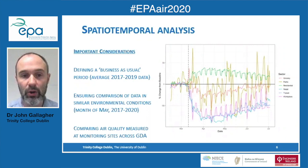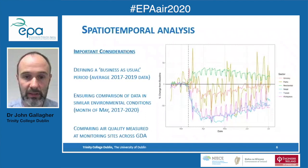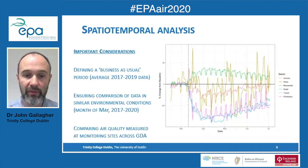A number of important considerations in our work: what is a business-as-usual scenario? A number of studies utilised three previous years — 2017 to 2019 data — and used that average of the three years as representative of the business-as-usual period and compared that to 2020. We also wanted to ensure that environmental conditions were taken into account, and we noted that the month of May between 2017 and 2020 in particular had very similar environmental conditions.